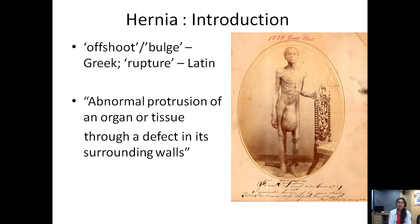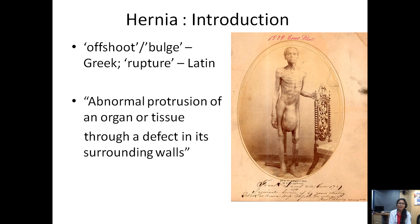An introduction to hernia: the etymology is derived from the Greek word meaning 'offshoot or bulge' and the Latin word meaning 'rupture.' A hernia is classically defined as an abnormal protrusion of an organ or tissue through a defect in its surrounding walls. We can see probably the first taken picture of a patient of groin hernia — a massive inguinal scrotal hernia taken way back in the 1500s.